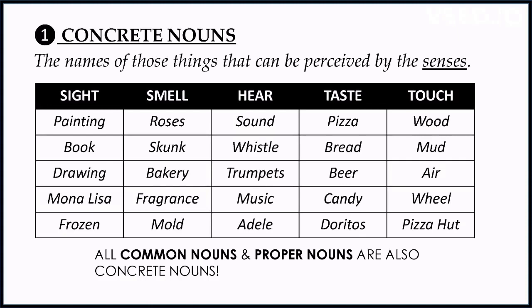For smell, we can smell roses, a bakery, or a skunk. For sound, we can hear trumpets or a whistle. One more point to remember is that all common nouns and proper nouns are also concrete nouns — we can sense common nouns as well as proper nouns. We will get to know what these two types are once we reach those slides.